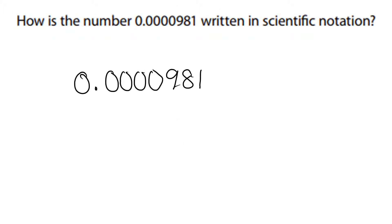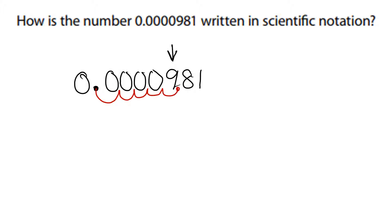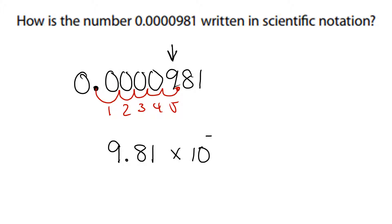We're going to take this number and write it in scientific notation by taking the decimal that is in the front and writing it behind the first number that's not a zero. Getting rid of all the zeros, the first number is a nine. We want the decimal to go behind the nine, so we move the decimal point five times. When we write our answer, we do not write the zeros — we simply write 9.81 times 10, always times 10, to the negative fifth power. It's negative because the zeros in front tell us it is a small decimal, and five because we've moved it five times.